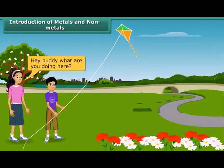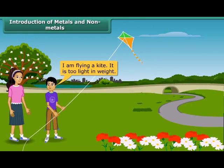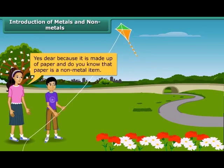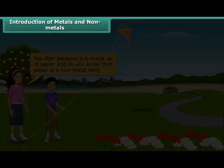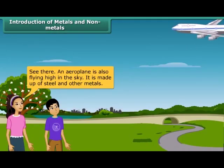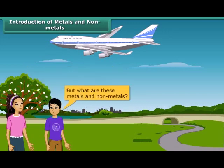Hey buddy, what are you doing here? I am flying a kite. It is too light in weight. Yes dear, because it is made up of paper. And do you know that paper is a non-metal item? See there, an aeroplane is also flying high in the sky. It is made up of steel and other metals. But what are these metals and non-metals?